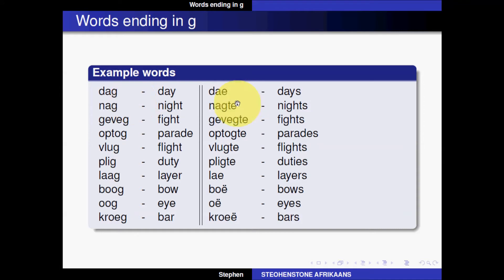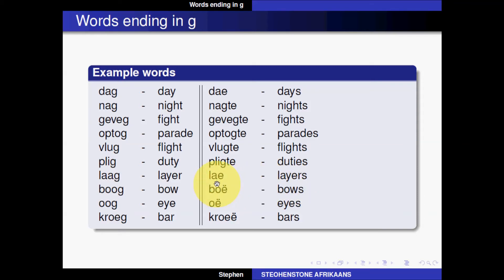With the exception of the first one, you can see a pattern in this group. We do also have some exceptions with the longer vowel sounds. The word for 'layer' in Afrikaans is 'laag,' and the plural 'layers' in Afrikaans is 'lae.' So compare: dag → dae, laag → lae.